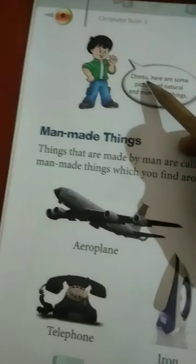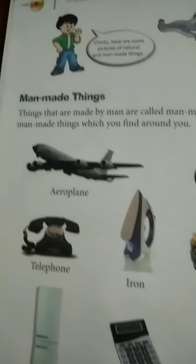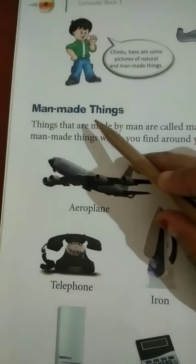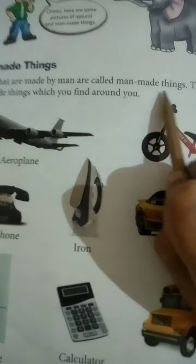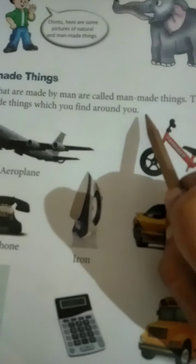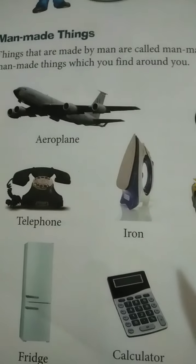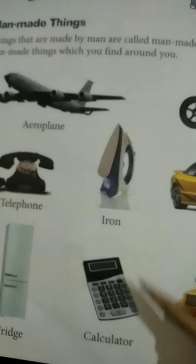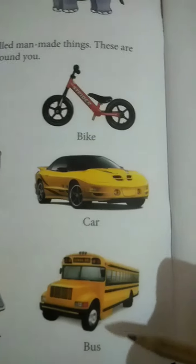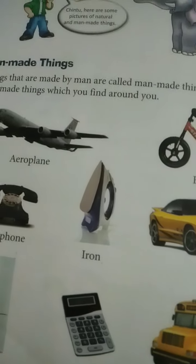Now see page number six. Chintu, here are some pictures of natural and man-made things. Things that are made by man are called man-made things. These are man-made things which you find around you. Man-made things are: aeroplane, telephone, fridge, iron, calculator, bike, car, and bus. And there are many more man-made things — including computer.